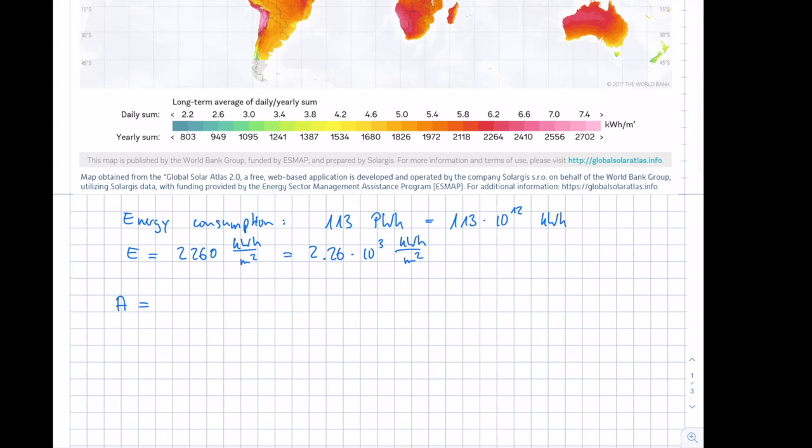It's just 113 times 10 to the 12th kilowatt-hours over 2.26 times 10 to the third kilowatt-hours per square meter. The unit, of course, is square meters. If you check this, this is 50 times 10 to the ninth square meters, or in a more appropriate unit, this is 50 times 10 to the third square kilometers, or 50,000 square kilometers, or 5 million hectares.